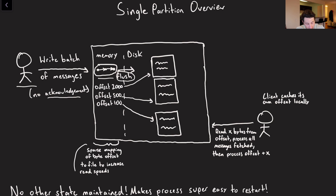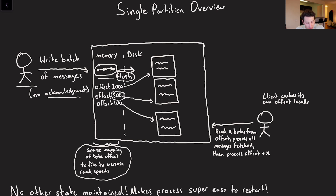What we'll do is maintain a sparse mapping of the byte offset of each message in a file to the actual file itself, which will make things a little bit faster. If I say I want to read the message at offset 700, I can see that's between 500 and 2,000. I'll binary search this sparse index — if 2,000 is pointing here and 500 is pointing here, I know that I have to read in this file, and that's going to make my life a little bit faster.